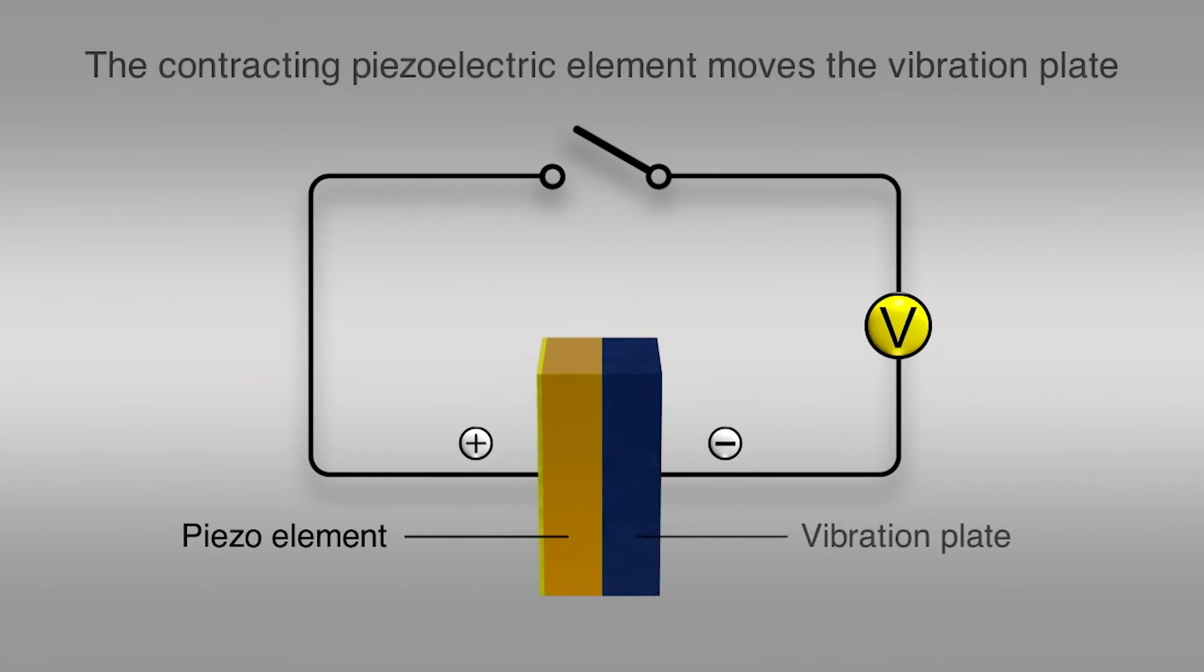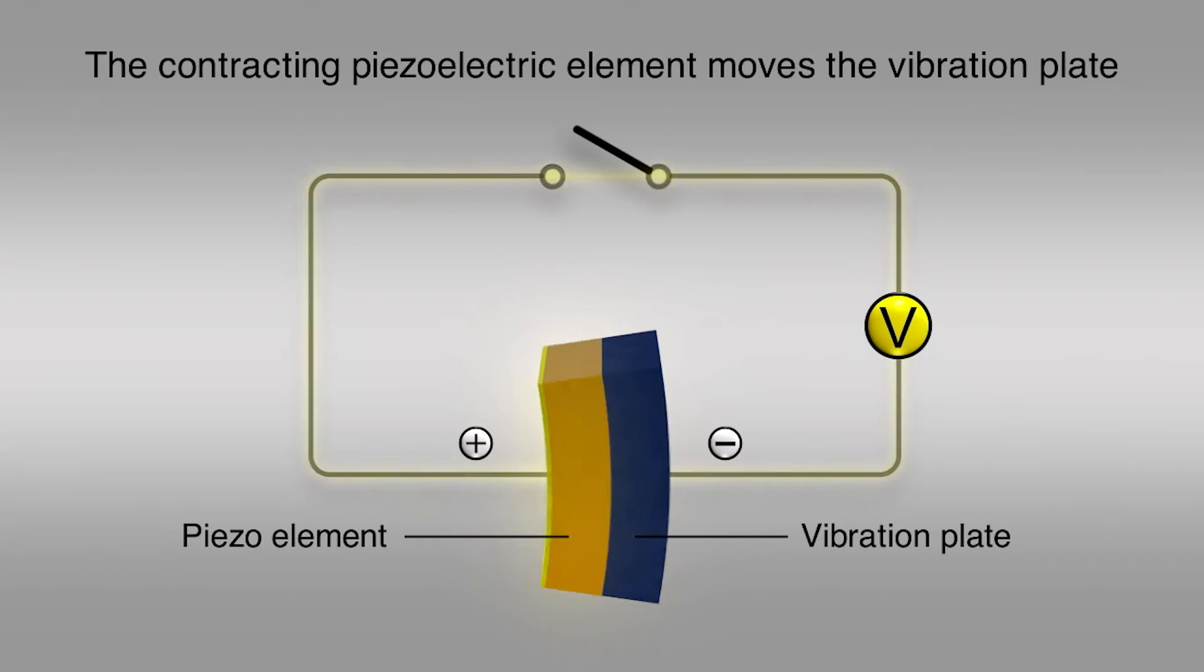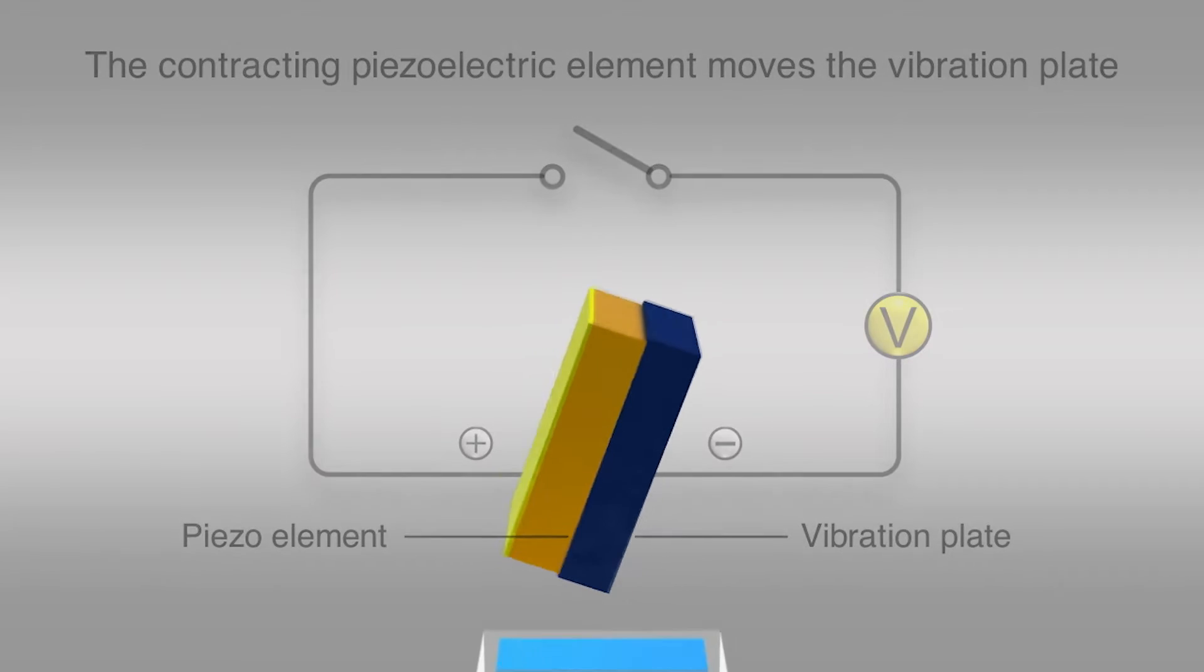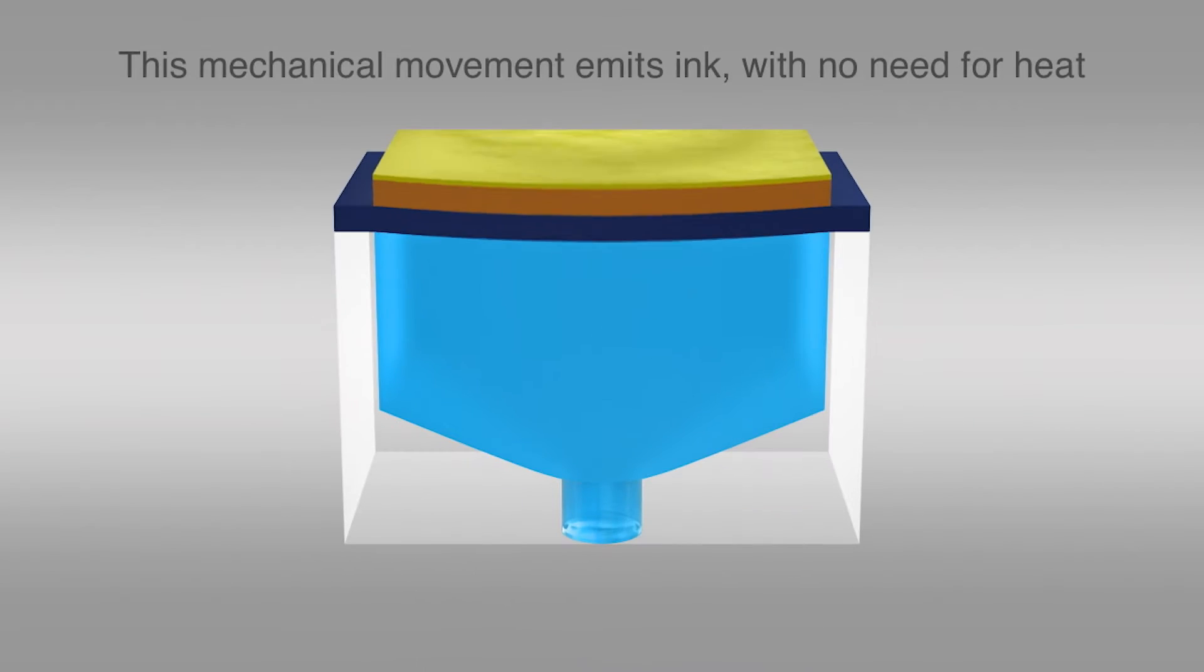Each piezoelectric element is paired with a vibration plate to form a set. The contracting piezoelectric element moves the vibration plate to generate an inkjet mechanically, with no need to heat the ink.